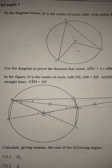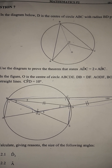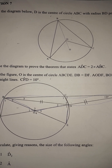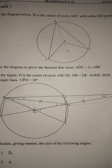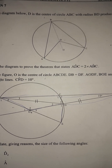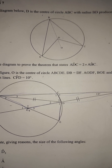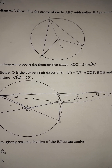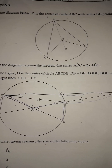What you should note when working with Euclidean geometry is what you should accept. There are proofs you need to know: the angle at the center is twice the angle at the circumference, the line from the center perpendicular to a chord, the line from the center to the midpoint of a chord, the tangent chord theorem, and the opposite angles of a cyclic quadrilateral. Those are the proofs that are examinable in Grade 11.